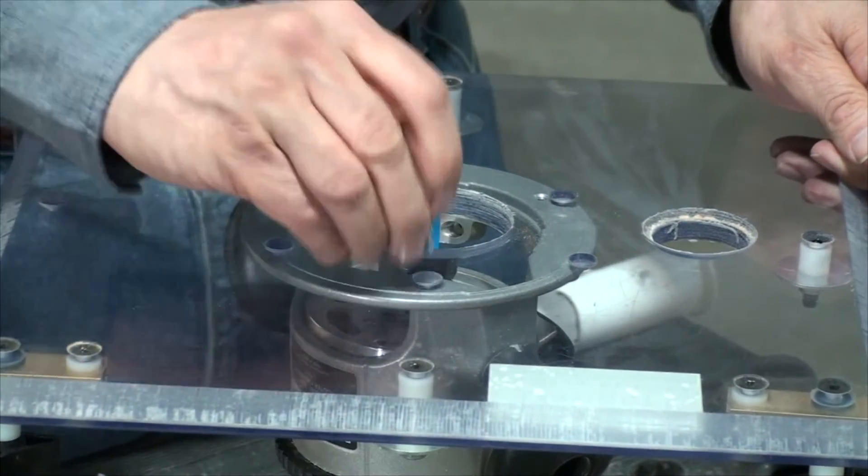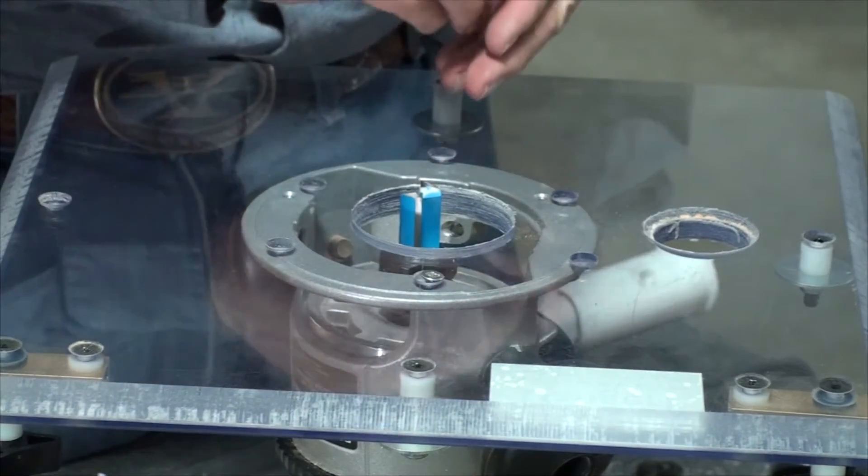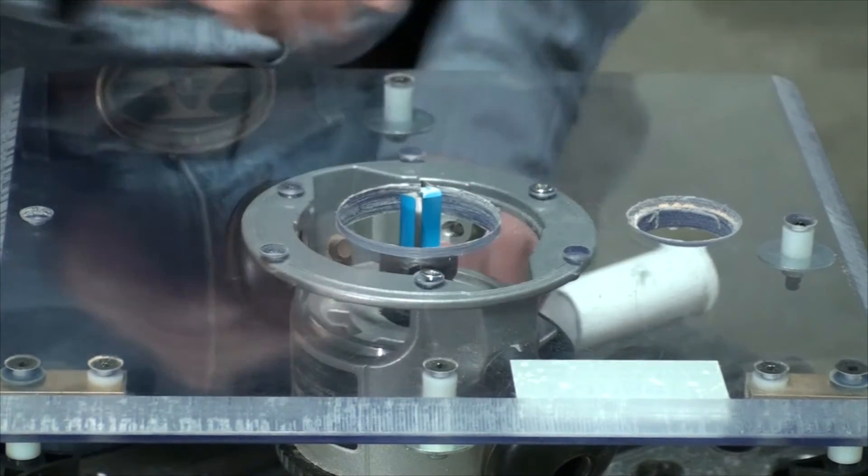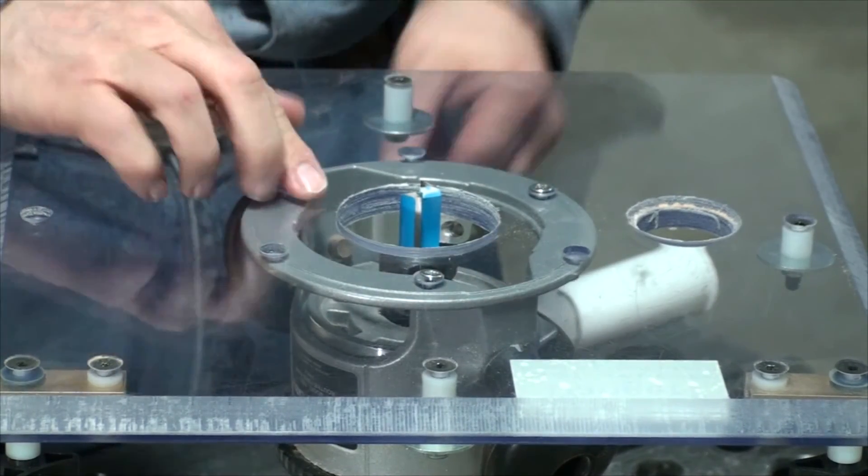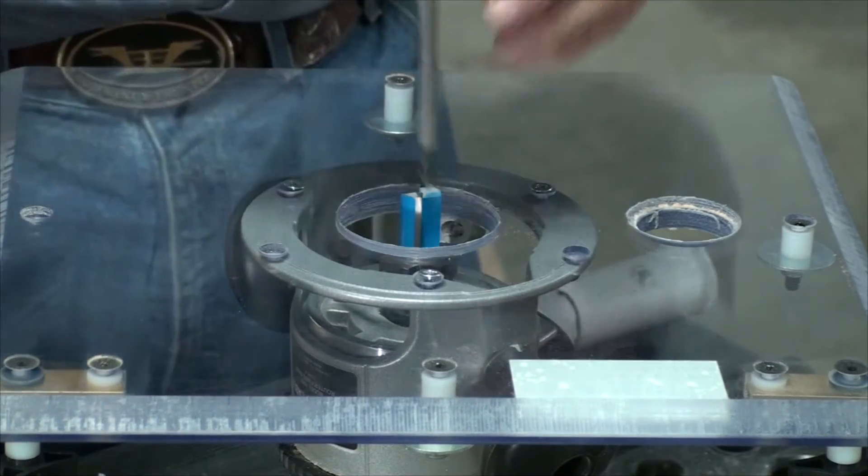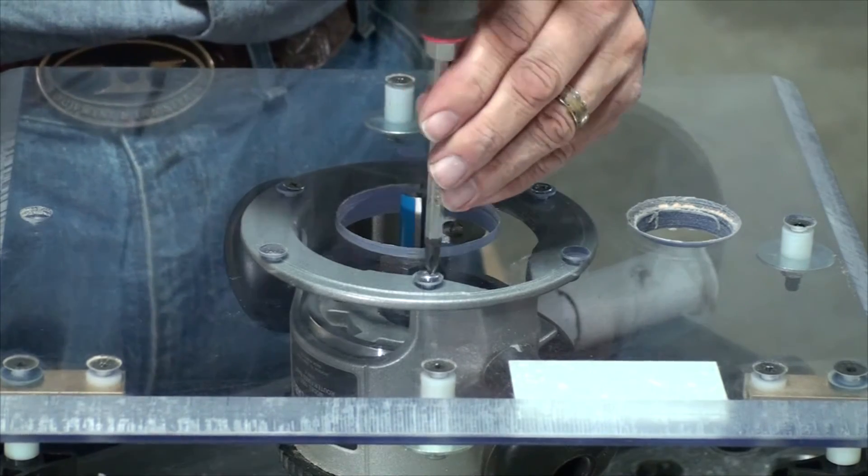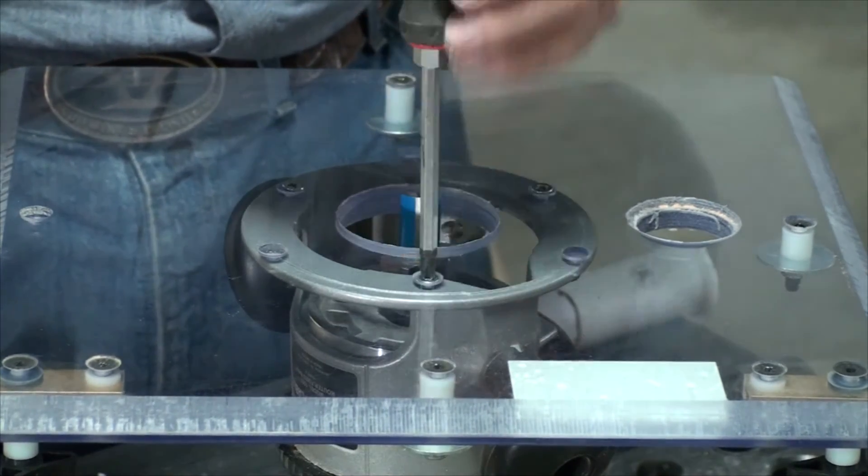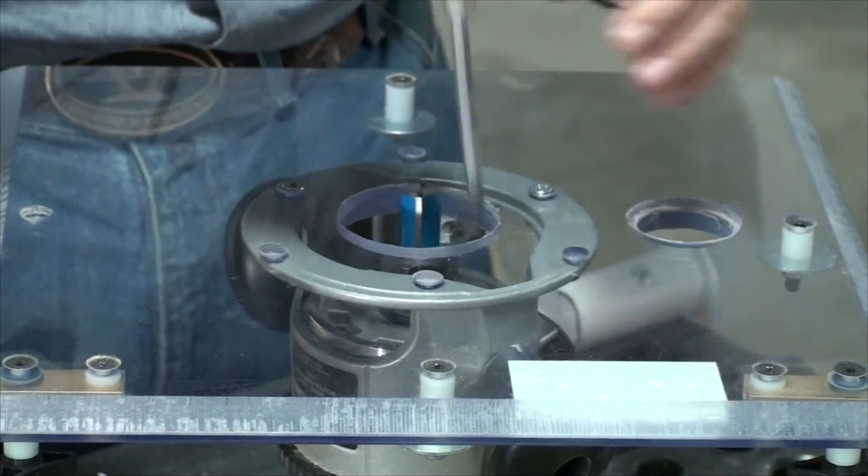This hole is for dust collection. Drop this down in place. Put the screws in. And then tighten them up. That's about all there is to it.